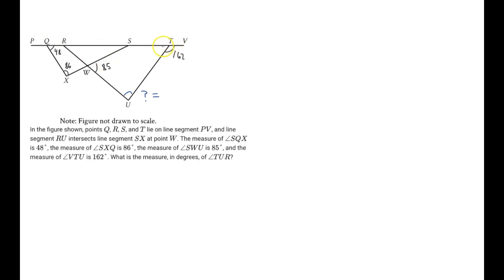So, the first thing I want to point out here is that we have two angles on a straight line. So, we have angle VTU, which we know is 162 degrees, and this angle UTS. So, this angle right here would just be 180 minus 162. So, 180 minus 162 is just 18 degrees. So, we know that this angle right here has to be 18 degrees.